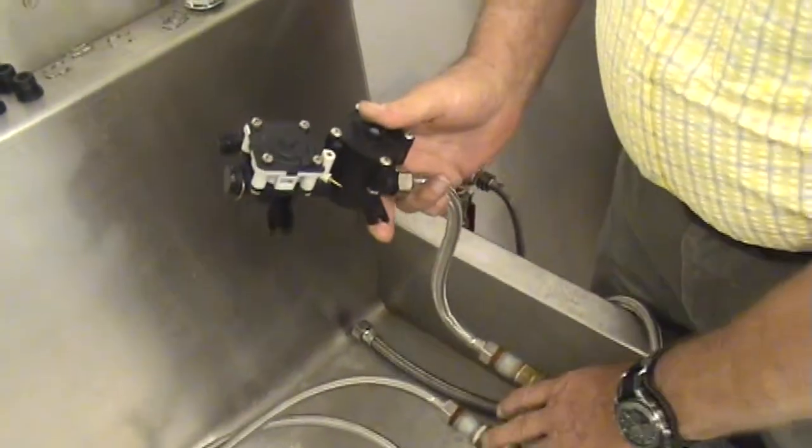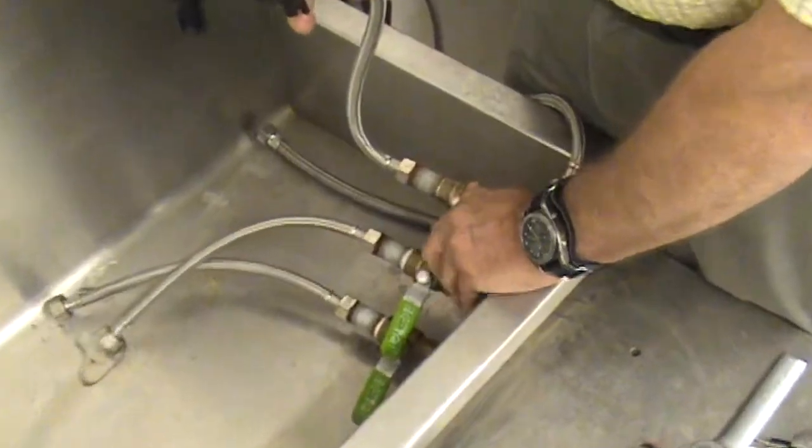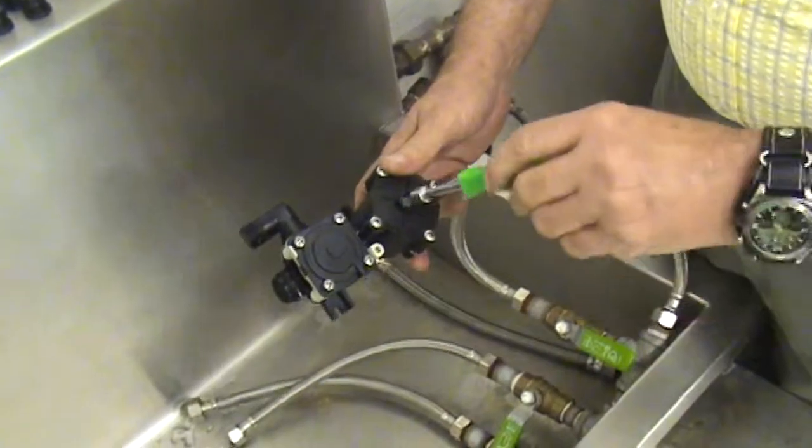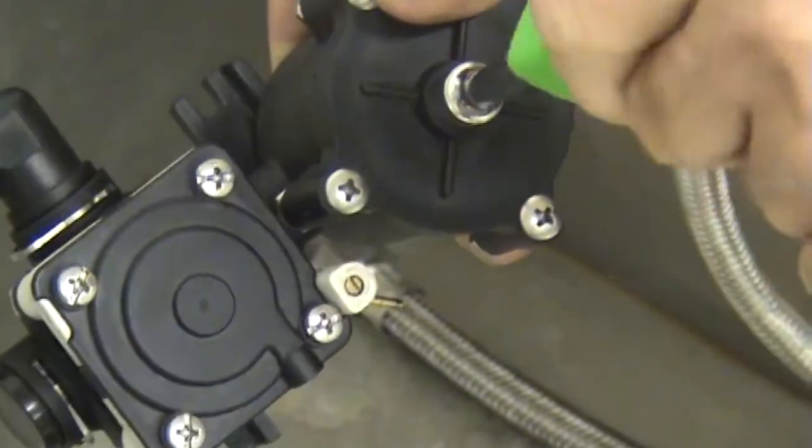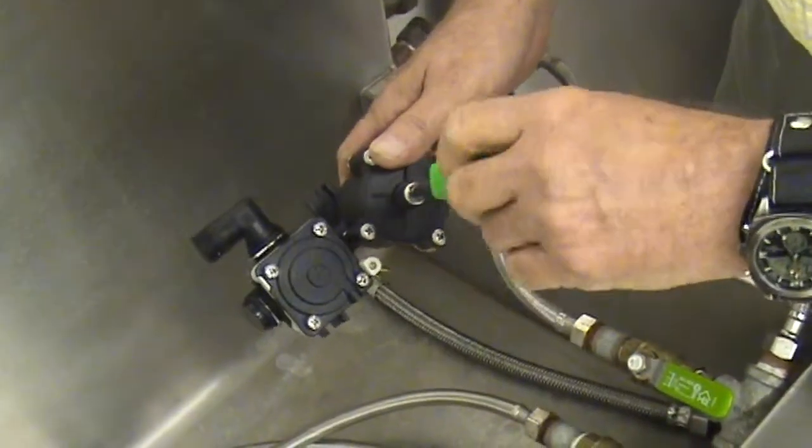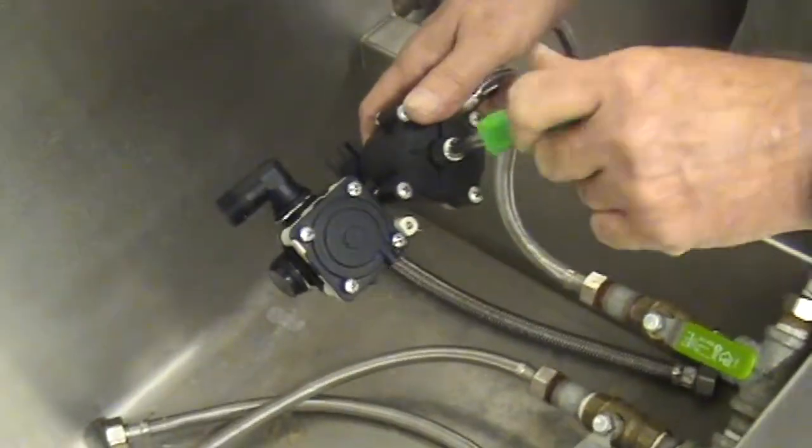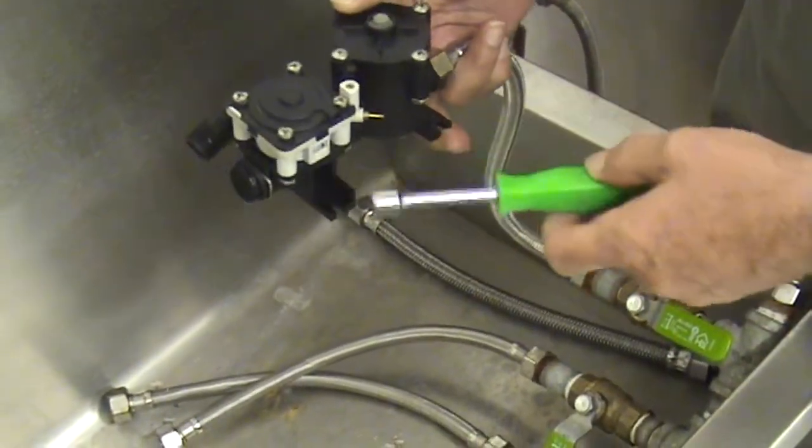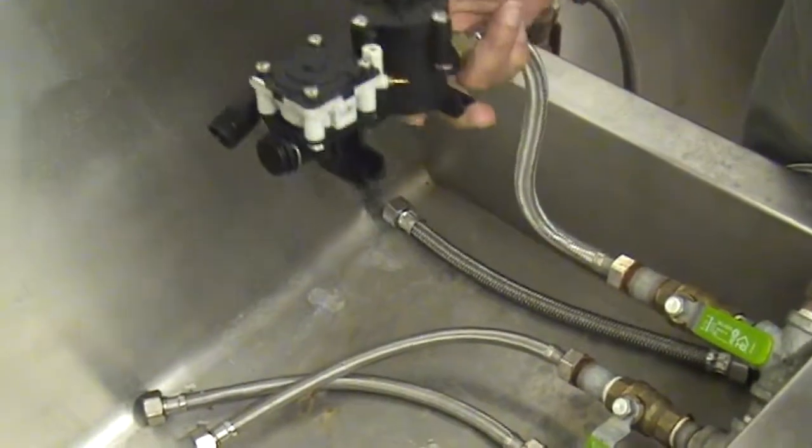First thing we want to do is make sure our water source is turned on and our check stop is open. Notice when you open the check stop, water comes on for a short period and then shuts off. That means your internal parts of your valve are probably working fine.